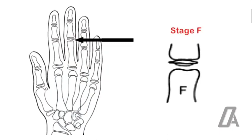In stage F, the epiphysis is as wide as the metaphysis. About 40% of individuals are before peak height velocity or PHV. Very few are at PHV.